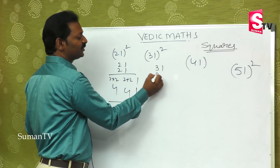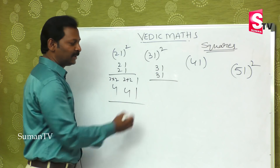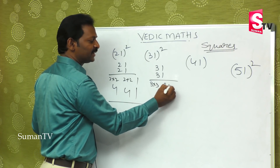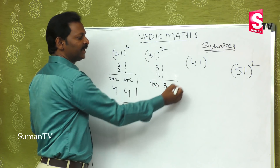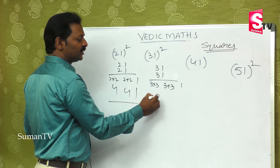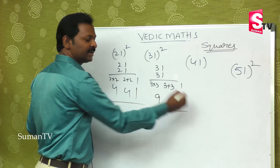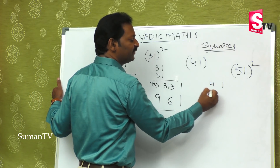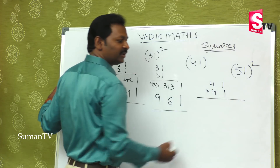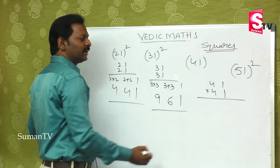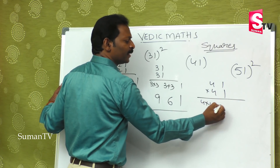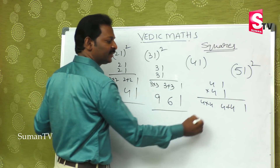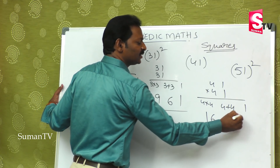For 31 into 31: first multiplication — three into three is nine, next addition — three plus three is six, then one. Answer is 9, 6, 1. For 41 into 41: first four into four is sixteen, then four plus four is eight, then one — giving 16, 8, 1.